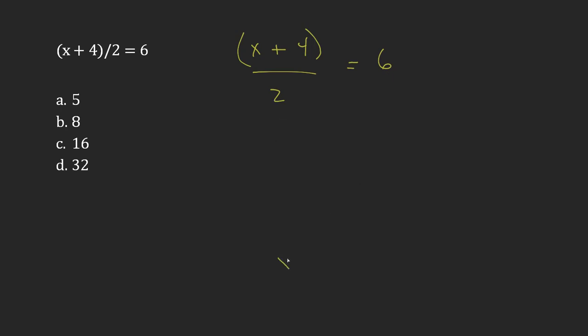Now, I need to get this down to the point where x equals some quantity. So I'm going to do that by undoing the operations that are going on here.